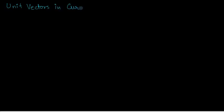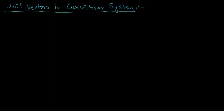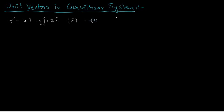Unit vectors in curvilinear system. If there is a position vector r written as x·i-cap plus y·j-cap plus z·k-cap, this is a specific position in space — let us say that point is P. This is equation number 1. If u1, u2, u3 are the generalized coordinates of any transformation, then r can be written in terms of u1, u2, u3.